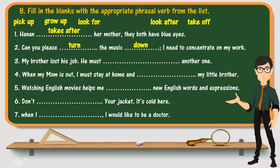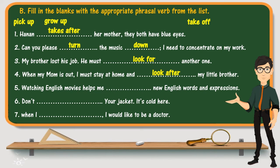Sentence three: 'My brother lost his job — he must ___ another one.' The matching verb is look for — he must look for another one, meaning search for another job. Sentence four: 'When my mom is out, I must stay at home and ___ my little brother.' The meaning is to take care of my brother, so the answer is look after — I must look after my little brother.